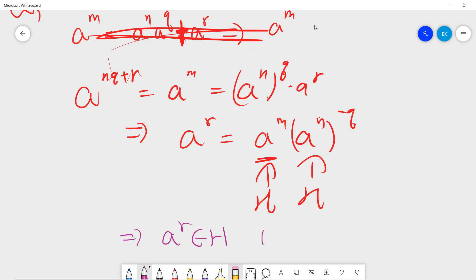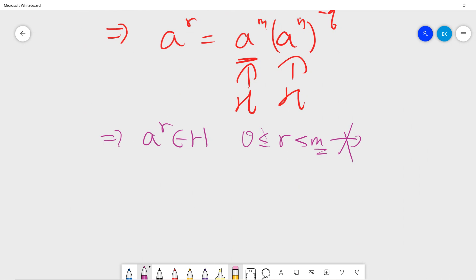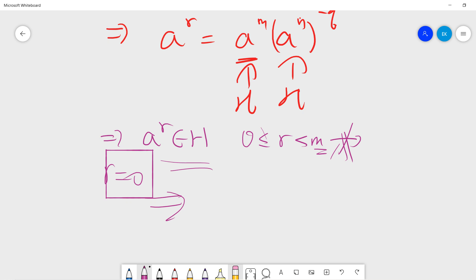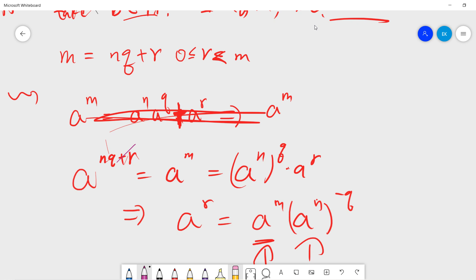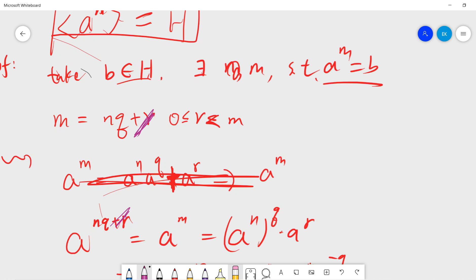But R is less than M, from 0 less than M. This contradicts that M is the minimum number such that A to the M will be in H. So this is a contradiction. The only possible case is R can only be 0. So R must be 0.